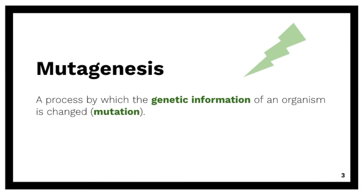Mutagenesis is a process by which the genetic information of an organism is changed via mutation. We can do it in the lab through chemical, irradiation, or insertional methods.